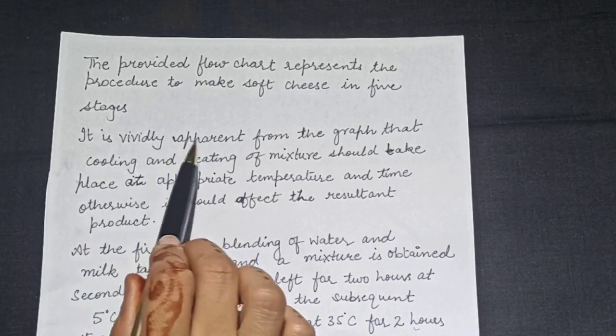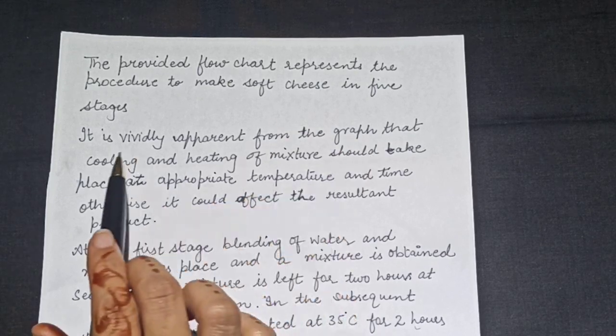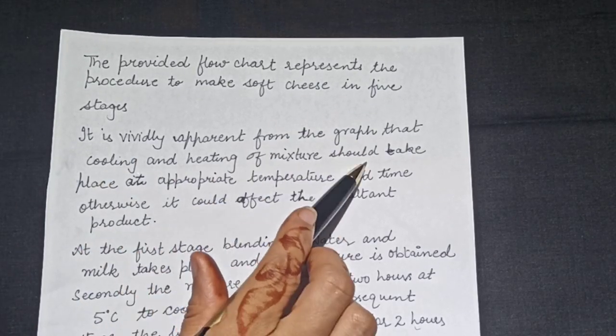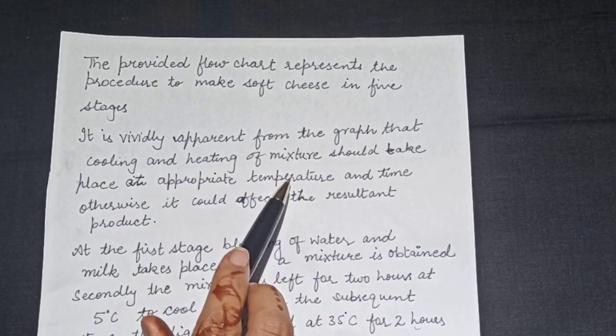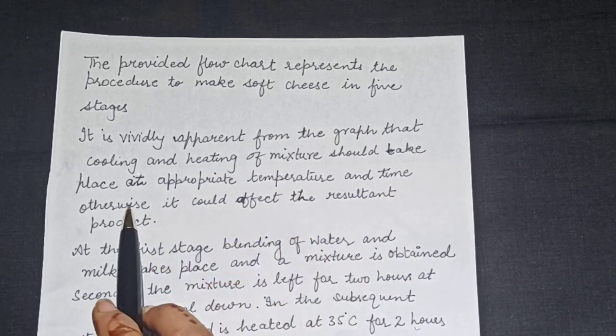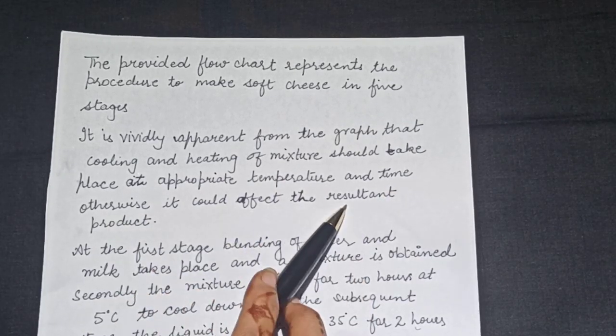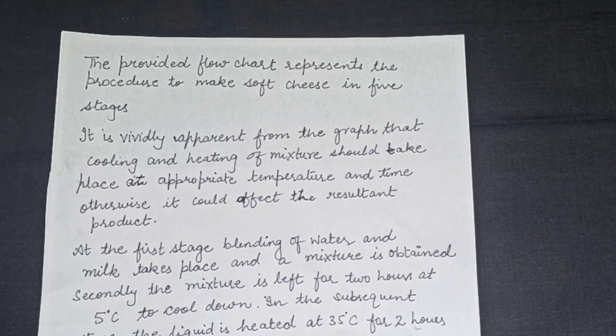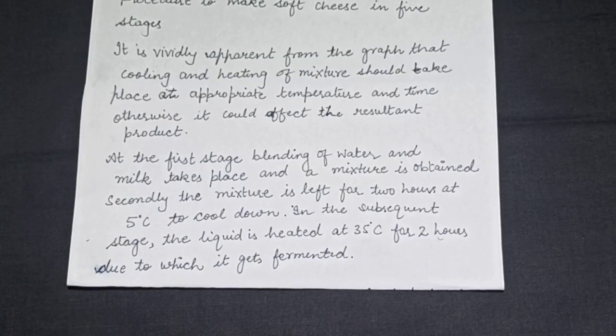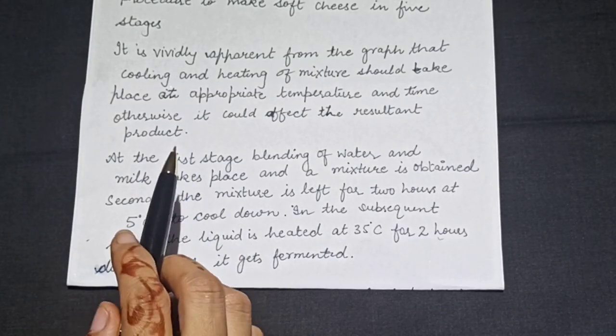Now it is vividly apparent from the graph that cooling and heating of mixture should take place at appropriate temperature and time otherwise it could affect the resultant product. So this was our overview. Now let's describe the diagram.